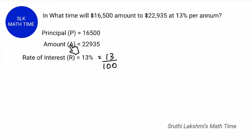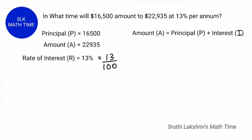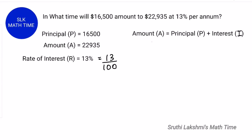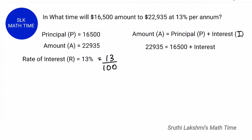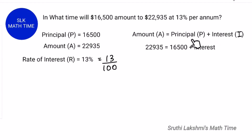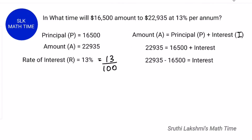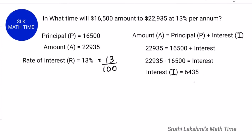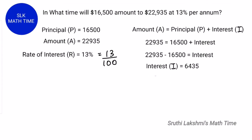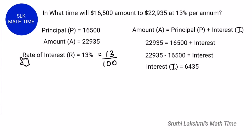Since we know the principal and the amount, we can easily find the simple interest using the formula: amount = principal plus interest. Let's substitute: $22935 = $16500 + interest. When 16500 comes to the other side it becomes minus 16500, and when we subtract this we get $6435, which is the interest.